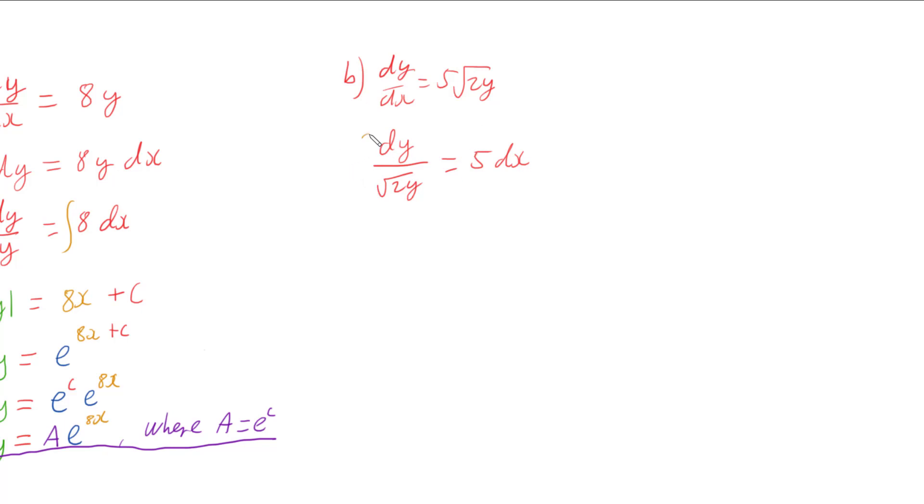So I've multiplied both sides by dx and divided both sides by the square root of 2y. And then I want to integrate both of these. Now the integral of the 5 dx is nice and easy, that's just going to be 5x.